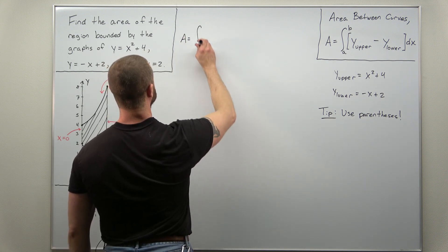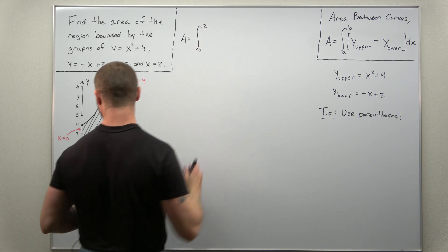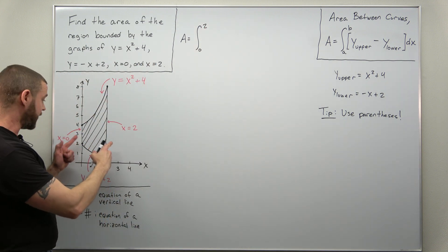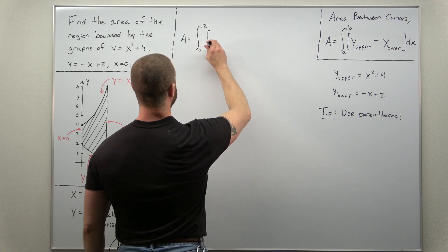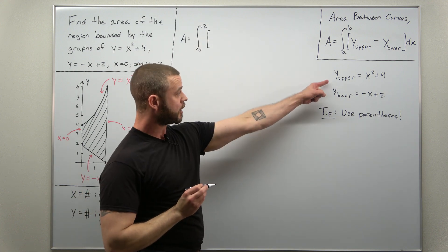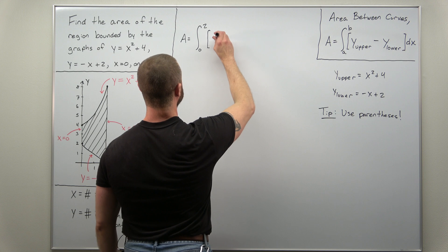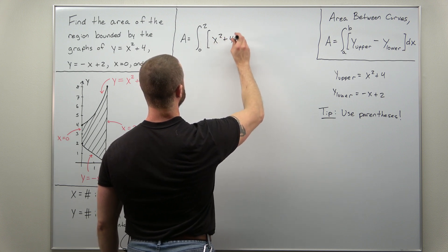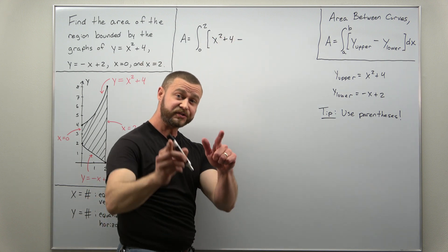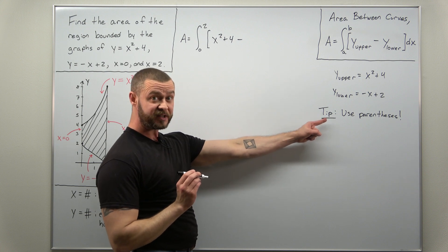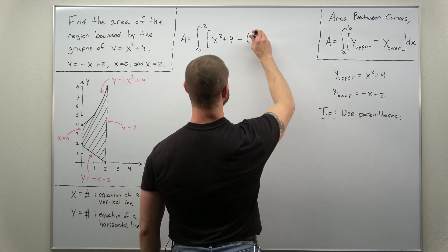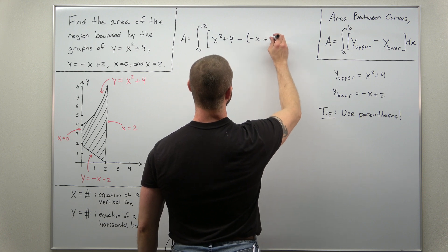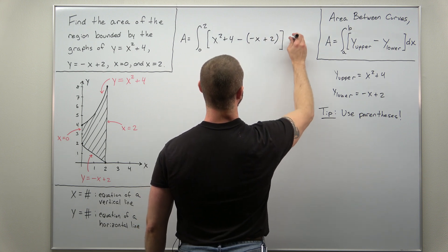Our integral here goes from 0 to 2. Those were the vertical lines bounding the region on the side and it's pretty simple. We take our upper function x squared plus 4 and I'm going to subtract using a set of parentheses. So minus and then negative x plus 2.